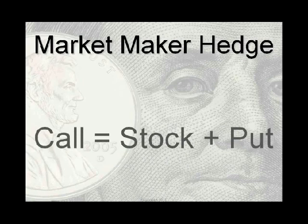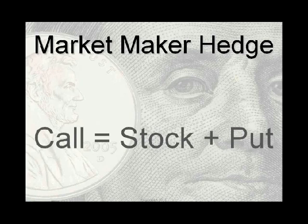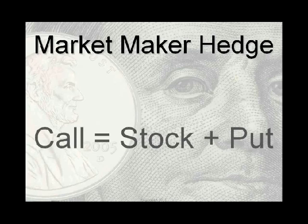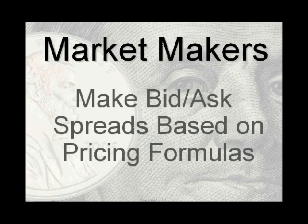Market makers try not to take on extra risk, and they use a very simple formula which I abbreviate as C = S + P: C standing for call, S standing for stock, and P standing for put. In a mathematical formula, to do something to one side of the equation you have to do equal action to the opposite side to remain in balance. So a call equals a stock plus put; if we remove put from the right, we remove it from the left — a call minus a put equals the stock. It's a synthetic equivalent that market makers use to hedge themselves.